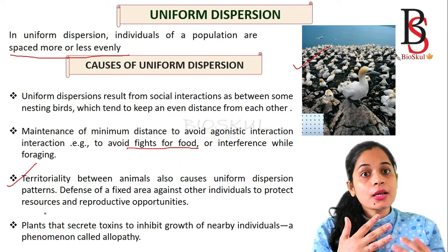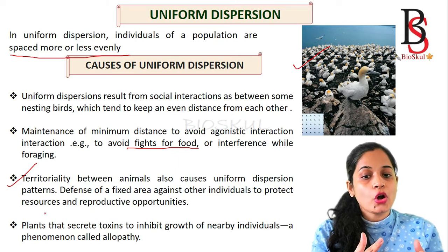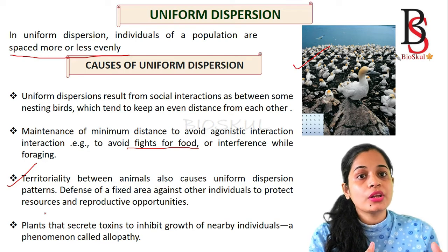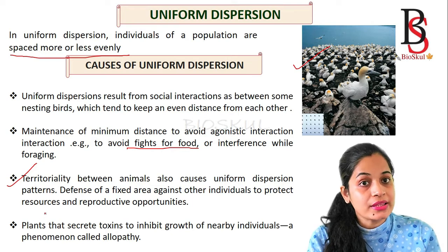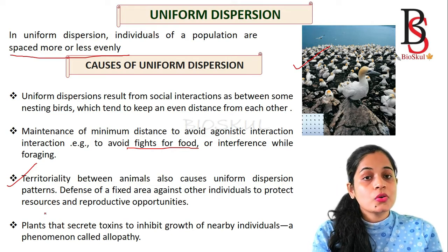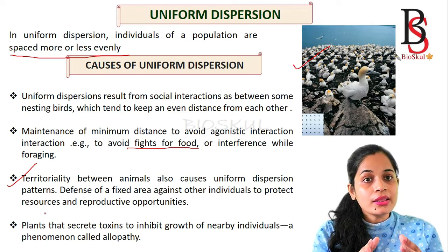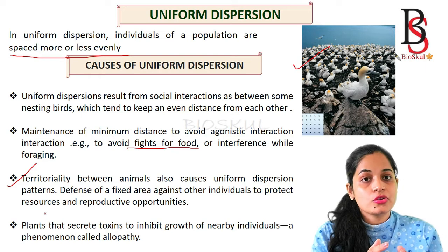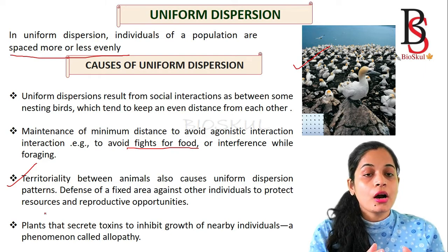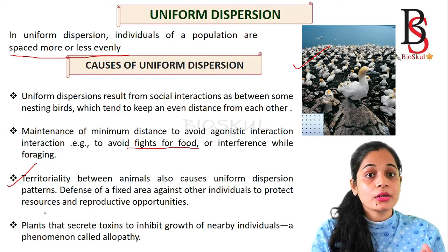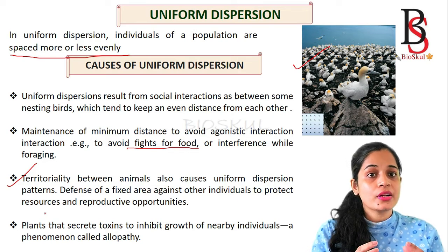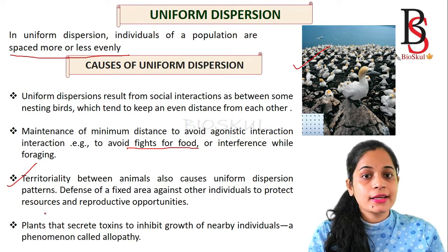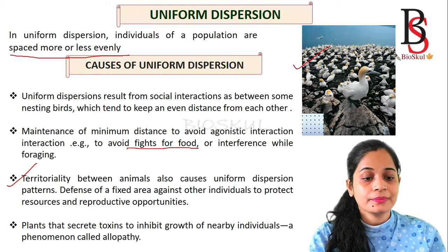In some plants, they secrete toxins that inhibit the growth of nearby plants — a phenomenon known as allelopathy. By these mechanisms — social interaction, territoriality, and allelopathy — individuals arrange themselves in a uniform pattern.